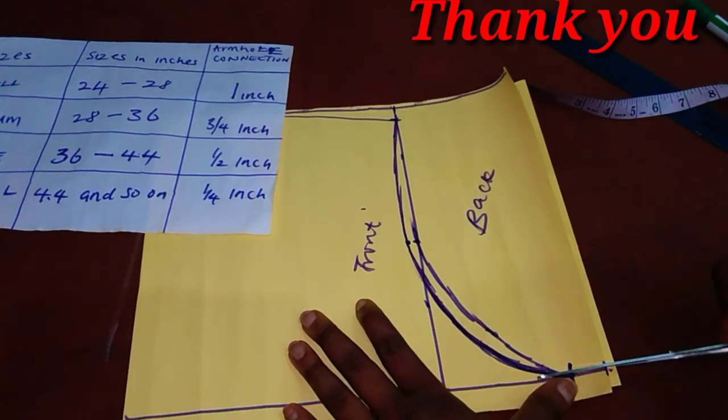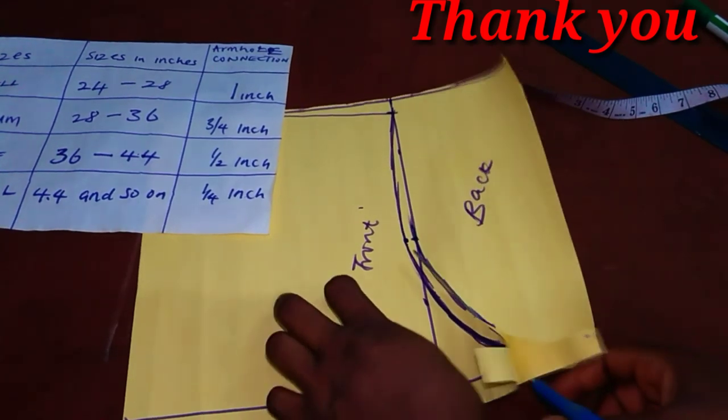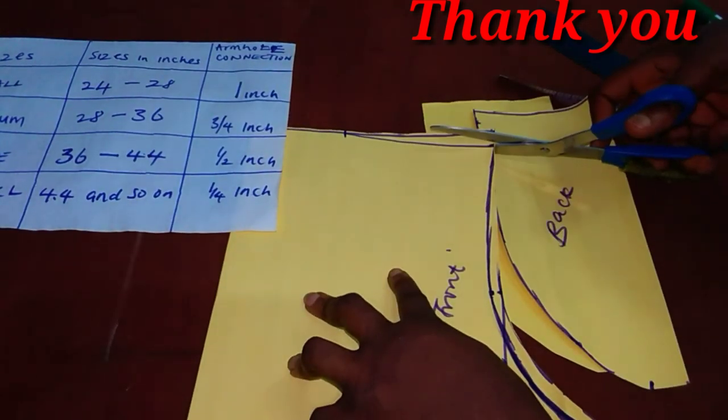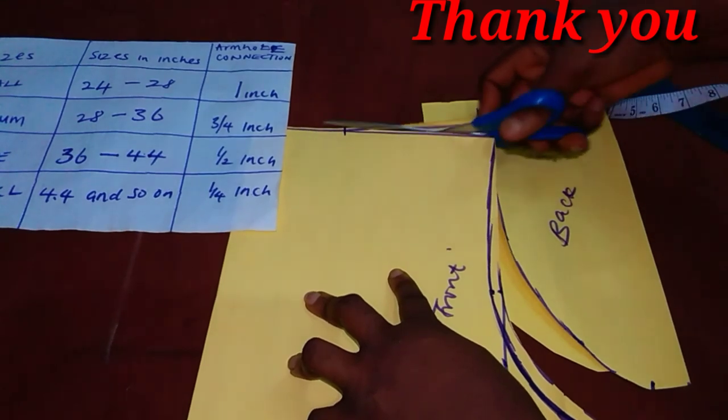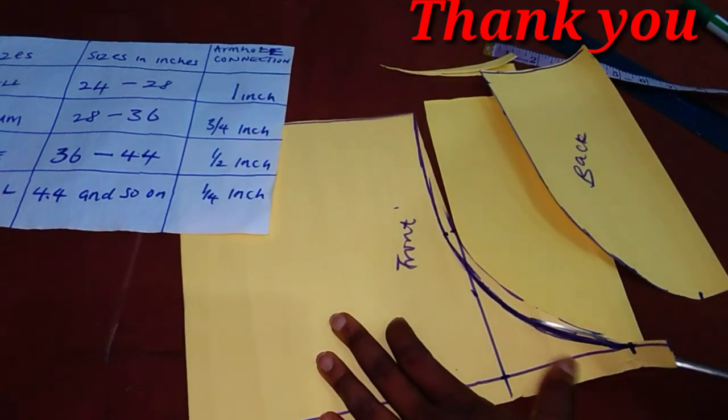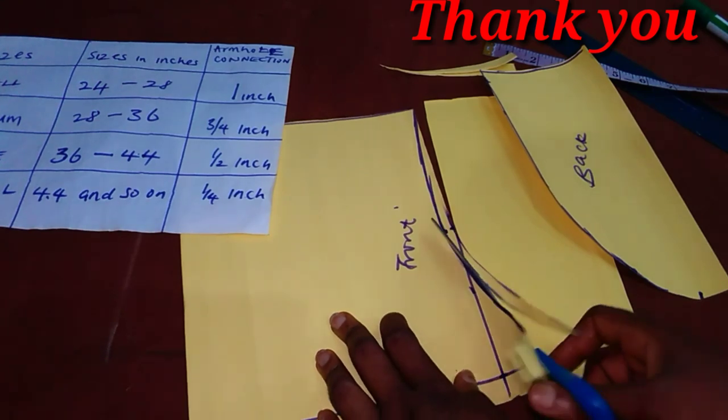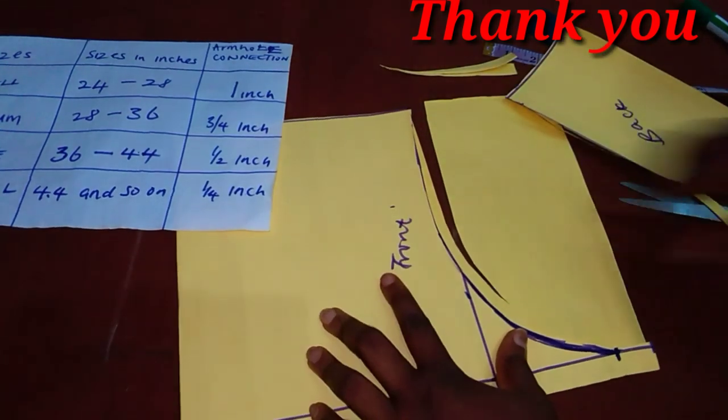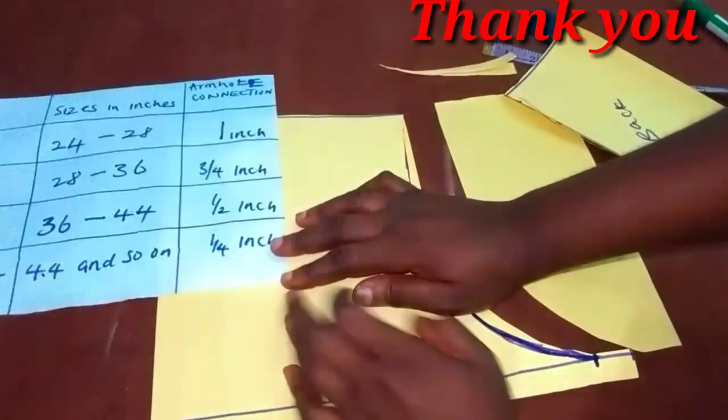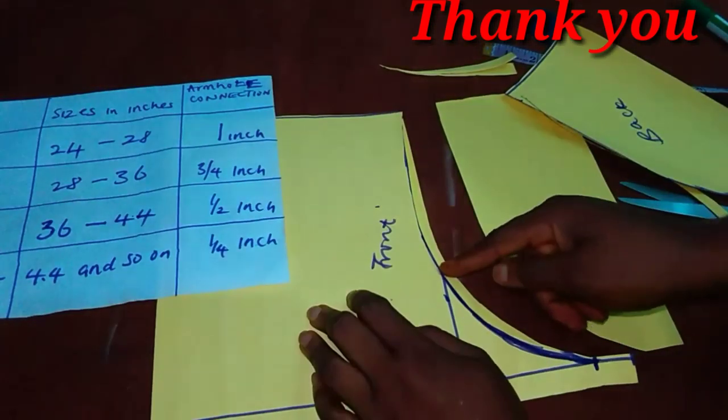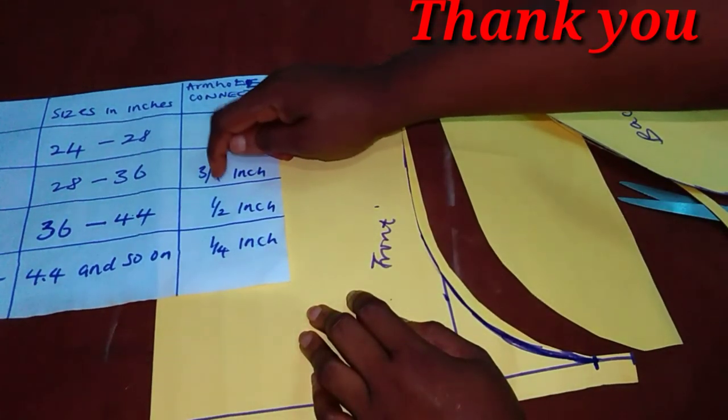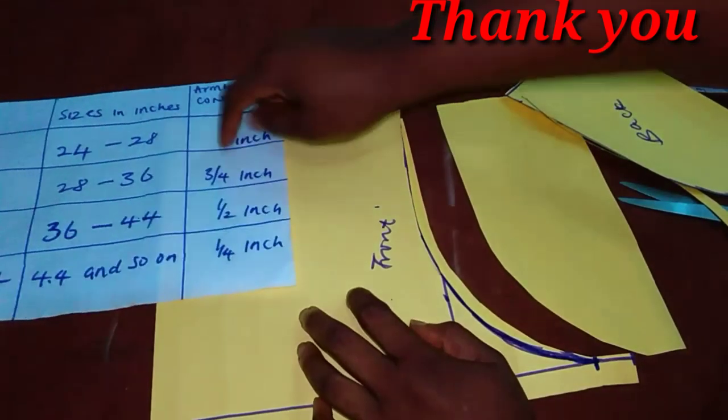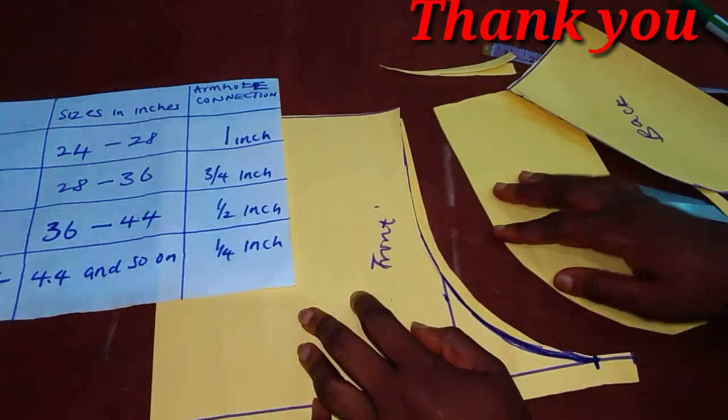Also, you cut the back armhole first of all. This is the slope. And then you remove the front. So, basically, what we are saying is, if your measurement is between 28 and 36, for this front, you are moving in by 3 quarter of an inch. If it is 24 to 28, you are moving in by 1 inch. I hope it's very clear.